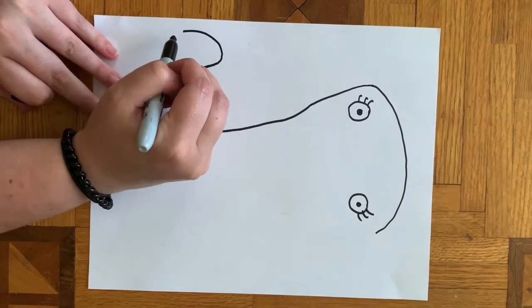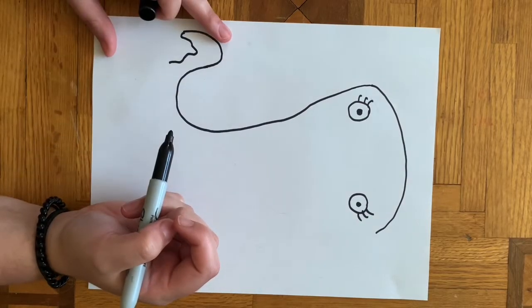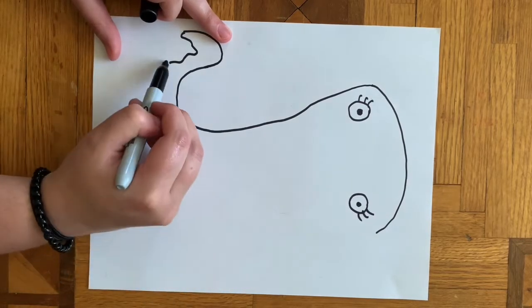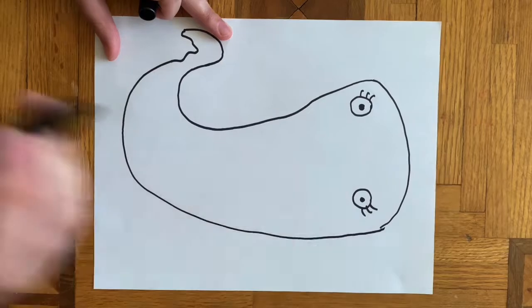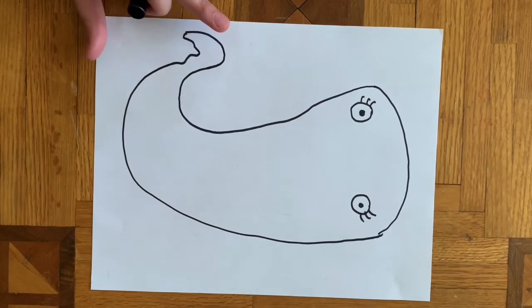You can kind of make the end of the tail a little bit funky if you would like and squiggly. And then you can add another big J to finish the whole body of your fish.